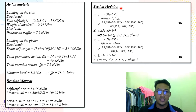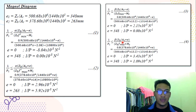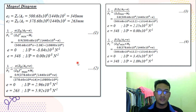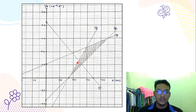We then calculate the section modulus for checking. To determine the eccentricity, we use the Magnet diagram and choose a suitable eccentricity. As you can see, this is the zone diagram. We decided to choose an eccentricity of 300mm.